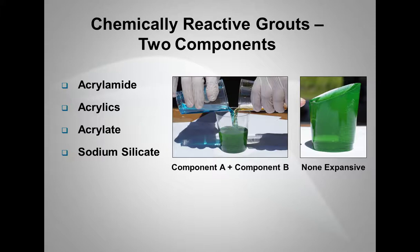The chemically reactive grouts are all two components. You mix A and B to form either an acrylic, an acrylamide, or an acrylate, or to form a sodium silicate. With the acrylamide acrylates and acrylics, they form a gel, and when intermixed with the soil matrix, create a very water-tight, impermeable seal. They're predominantly used for water control. Whereas sodium silicates, their predominant use is a structural application and temporary support.